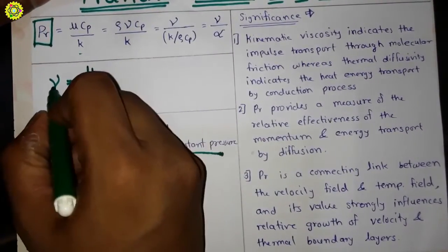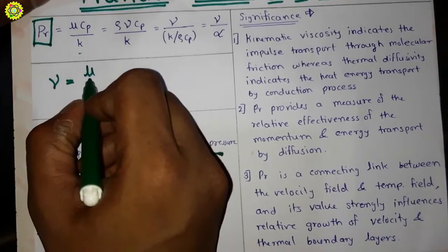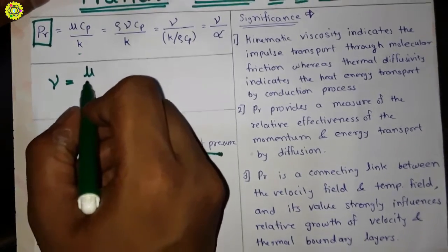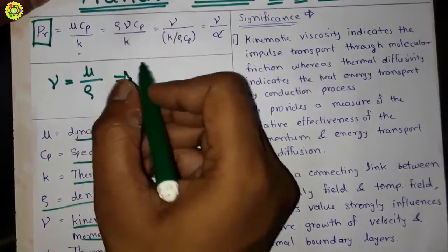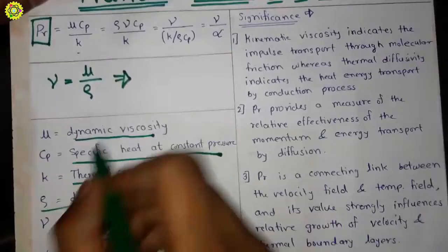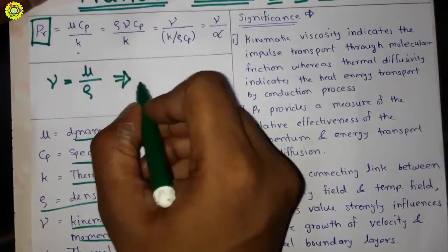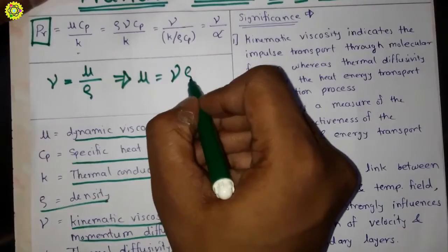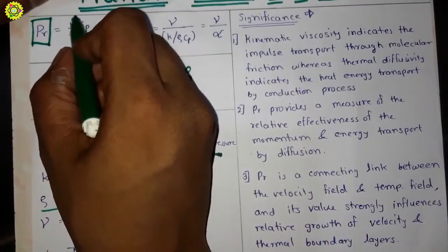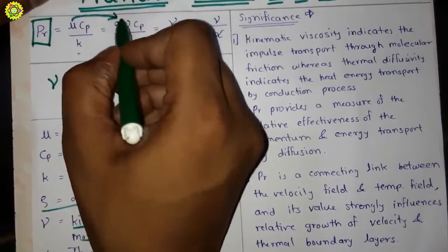...nu equals mu upon rho. So after simplifying this, here mu is dynamic viscosity, mu equals nu into rho. So here this mu is converted into rho*nu.